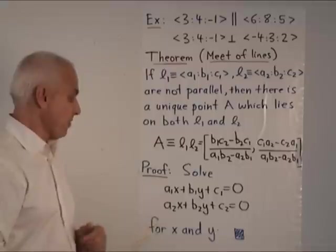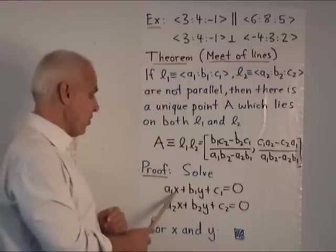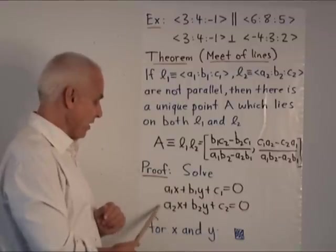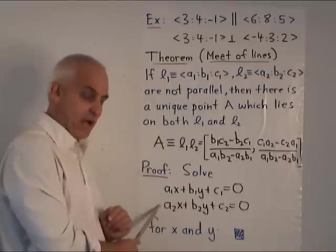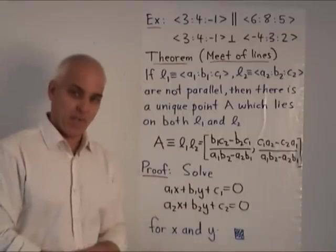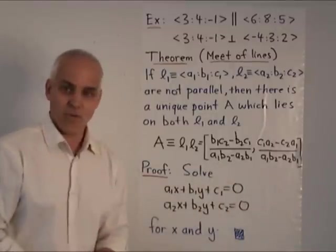This is proven by essentially solving two equations for an unknown x and y. There's the equation of a point lying on L1, there's the equation for that same point lying on L2. We solve those two equations in a reasonably familiar way for x and y and you get these two coordinates.